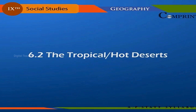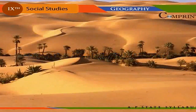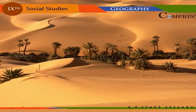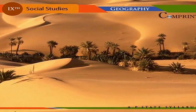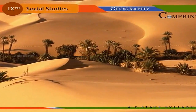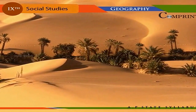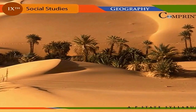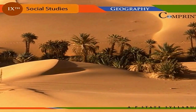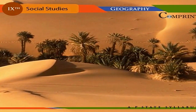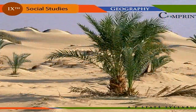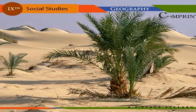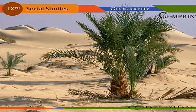The tropical or hot deserts are those areas on the Earth's surface characterized by the scarcity of water and hence are largely uncultivated. Deserts have extreme climates. The world's highest temperature was recorded at Azizia in Libya, in the Sahara Desert in Africa. The steep valleys in the deserts are called wadis, and the flat-bottom temporary lakes are called playas.